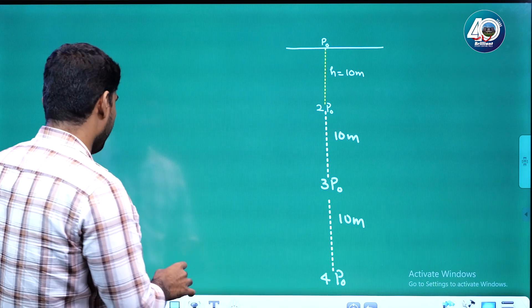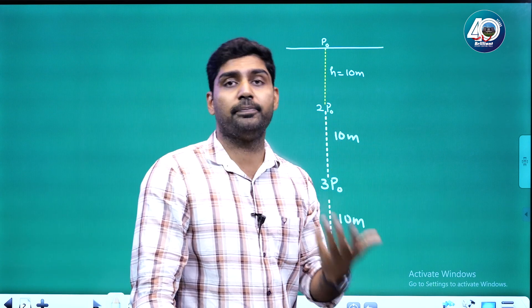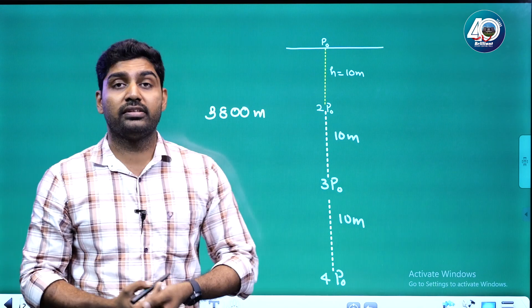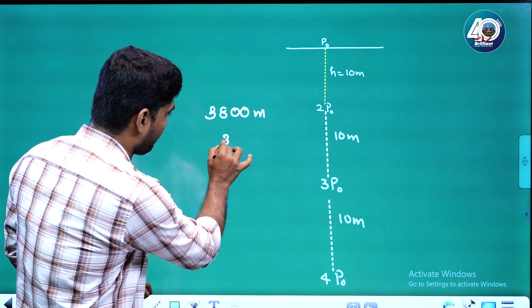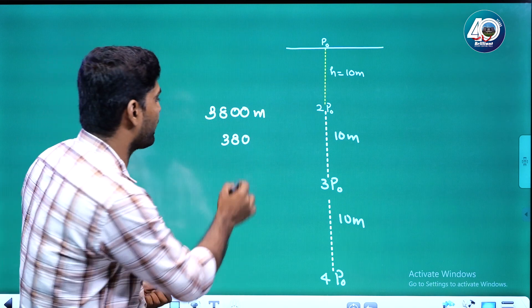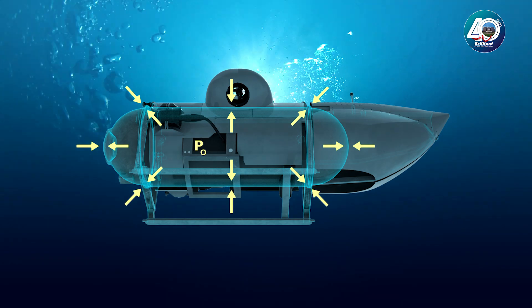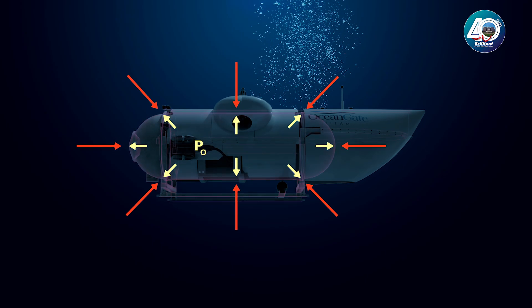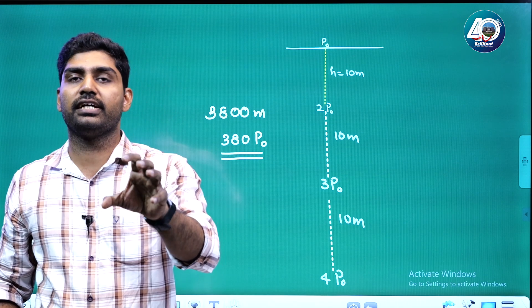If you go to the Titanic depth, where the Titan imploded, the depth is about 3,800 meters. At that depth, the pressure is enormous — many times P0 — adding a huge amount of pressure.